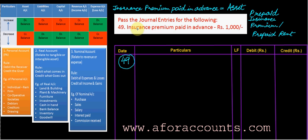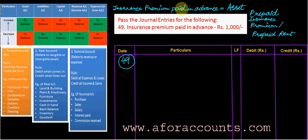Entry number 49: insurance premium paid in advance, rupees 1000. First, tell me what is the nature. Insurance premium is an expense — we insure our fixed assets or building against fire, so that is an expense to the business. But when an expense is paid in advance, it becomes an asset for the business.